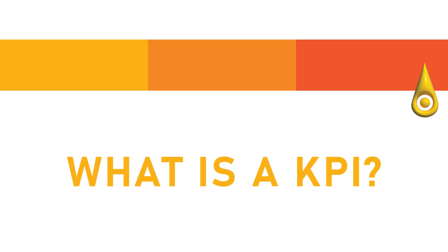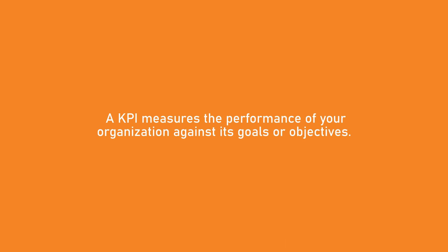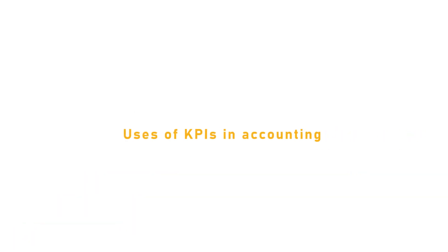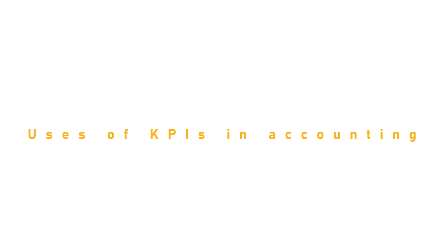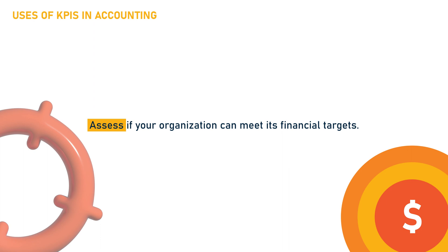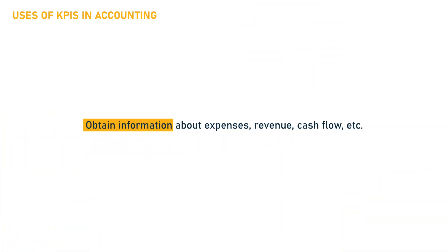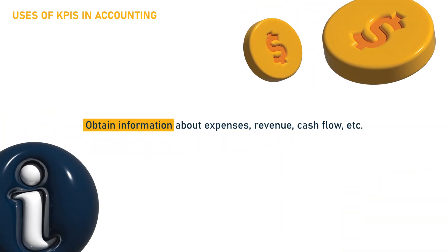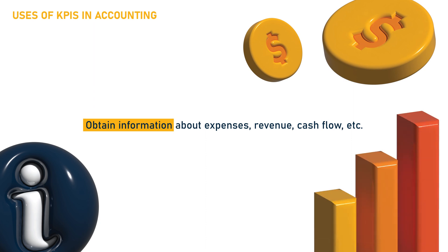A Key Performance Indicator or KPI measures the progress of your organization or department towards its goals or objectives. In accounting, you can use KPIs to assess if your organization can meet its financial targets. It also provides information on your organization's expenses, revenue, cash flow, and other relevant metrics.